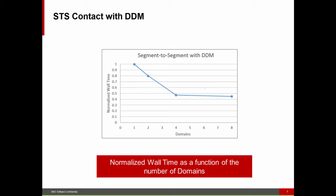This is not a particularly large model — it has about 1.5 million degrees of freedom. We see really good scalability when we go from serial mode to four domains. Since it's not very large, we don't have much additional parallelization beyond that. Nowadays, we really recommend using the segment-to-segment method over the previous node-to-segment method.